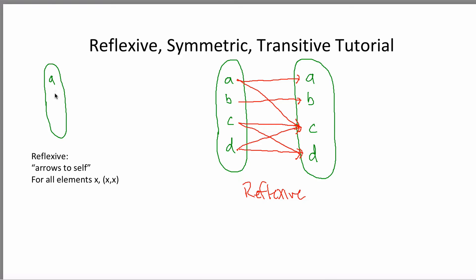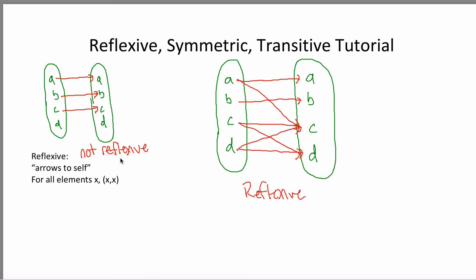What would a relation that's not reflexive look like? Let's stick with A, B, C, and D. Maybe I have an arrow from A to A — good — and B to B, and C to C. But that's it. It is not reflexive. Why? Because to be reflexive it's an all-or-nothing thing: for all elements there must be an arrow from that element to itself. Three out of four isn't good enough. There's not an arrow from D to D. So this is not reflexive because there is no arrow from D to D. Reflexive just means an arrow from every element to itself.